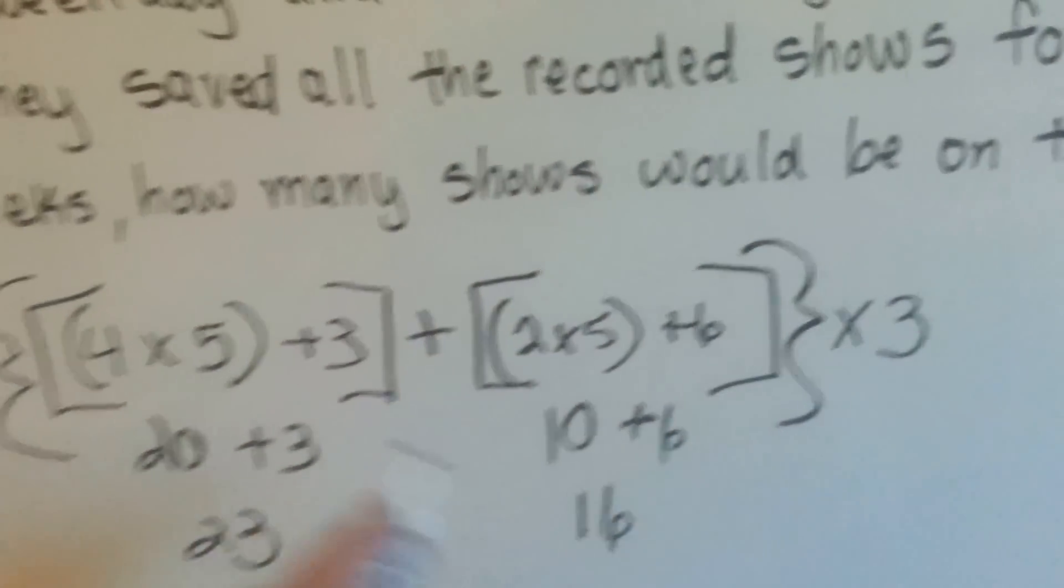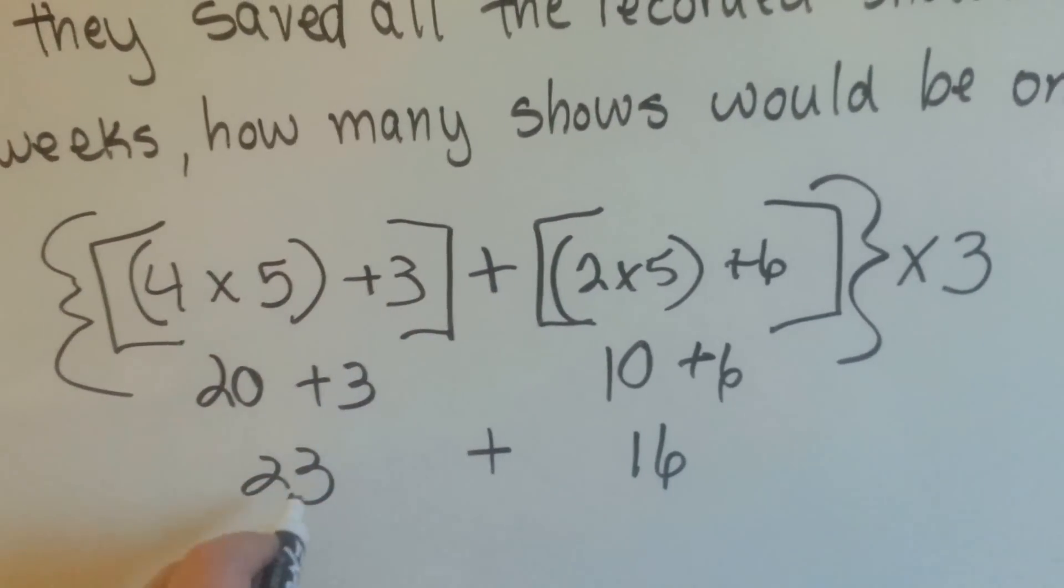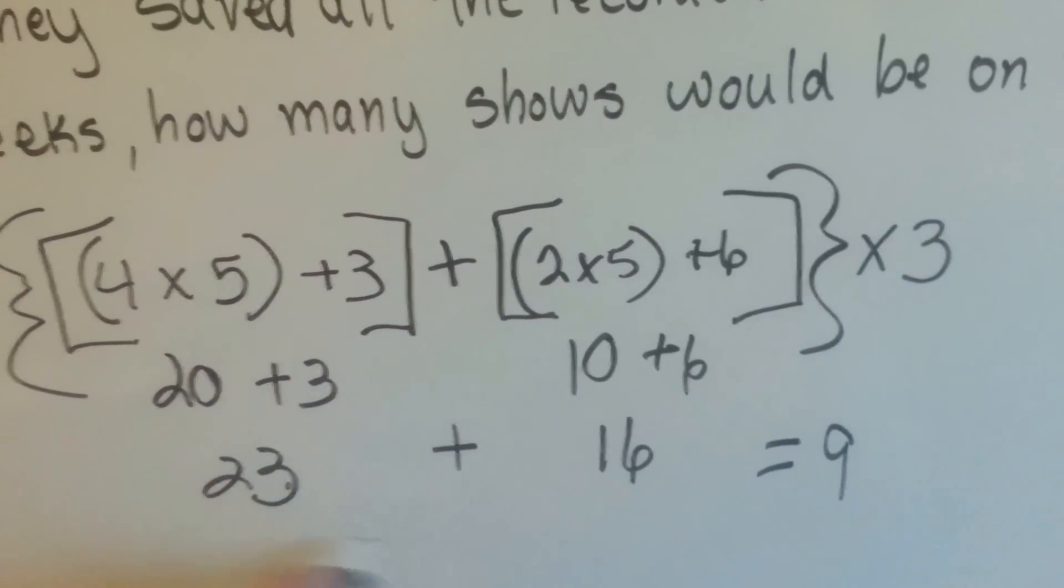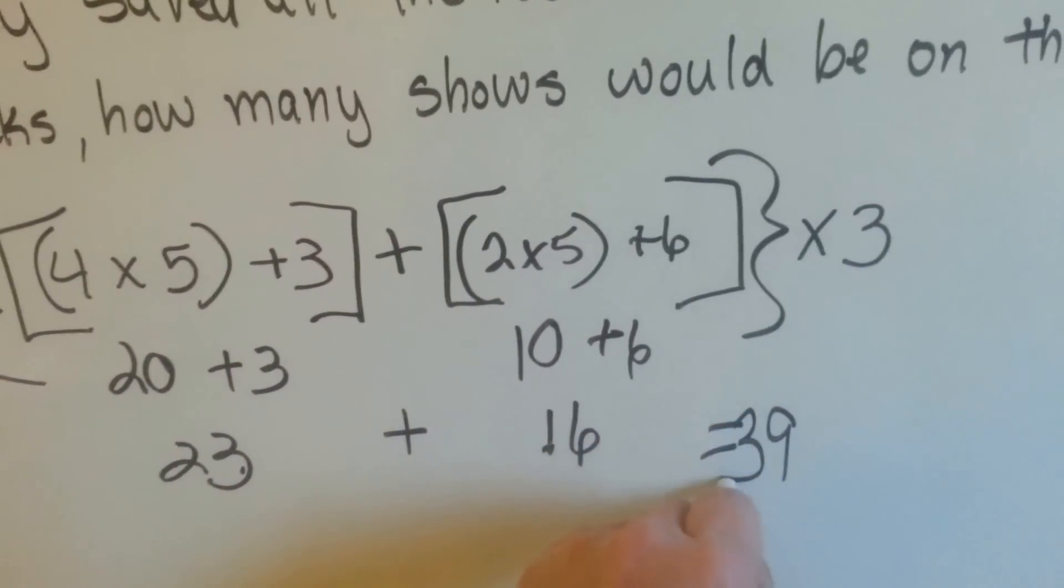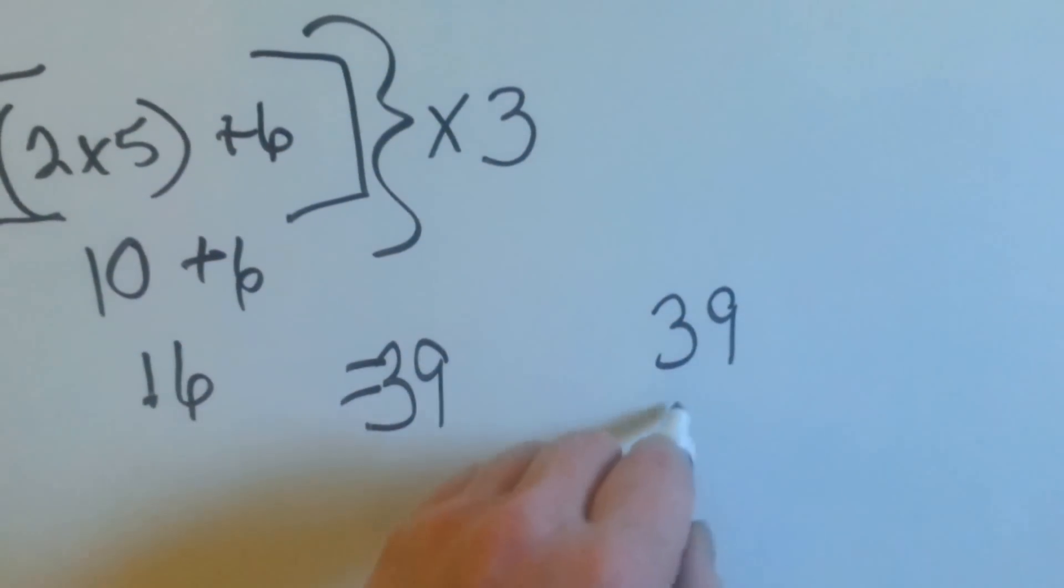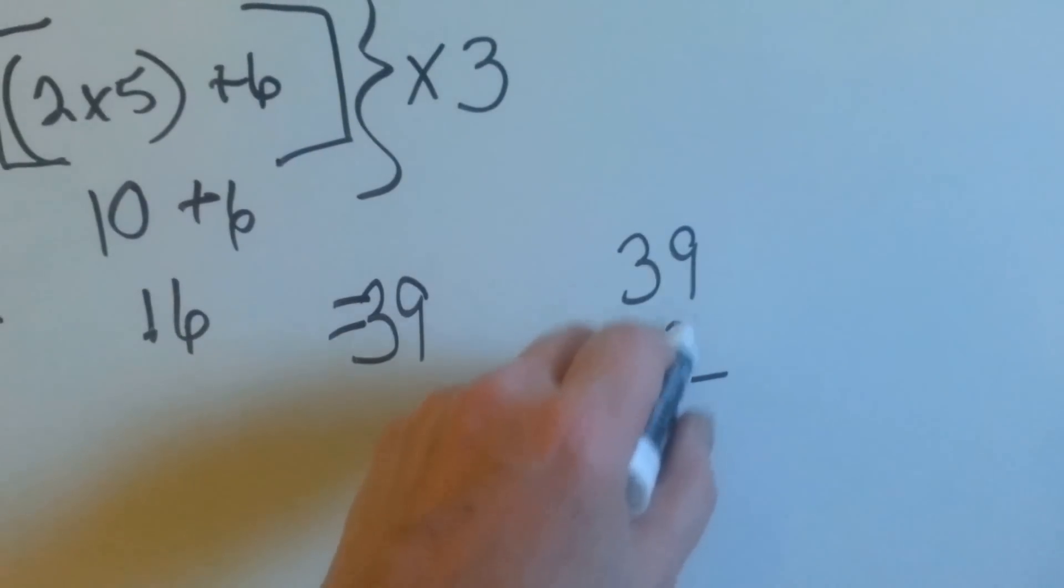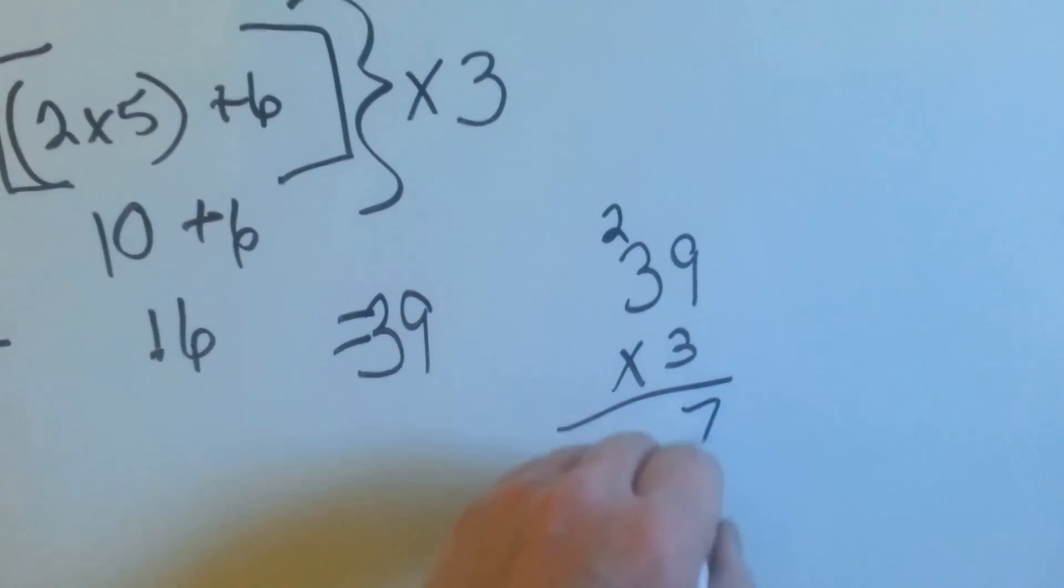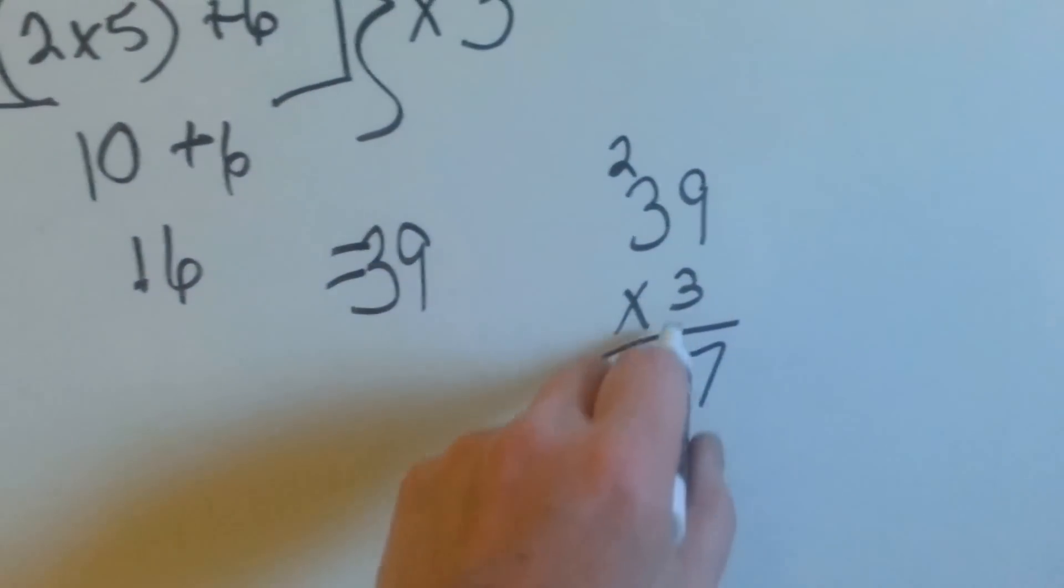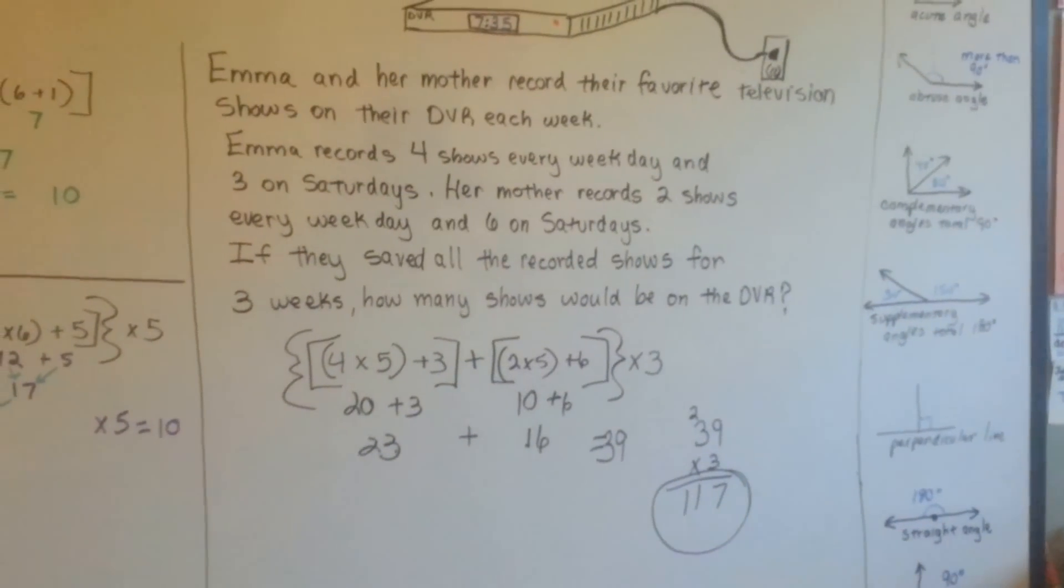We could have done braces to tell us that all of that was together. So now we need to do 23 plus 16. And 23 plus 16, 3 and 6 is 9, and the 2 and the 1 for tens is 3. So we have 39. And now we need to multiply that by 3. So 39 times 3. That means they have 39 shows they're recording every week on the weekdays and on Saturdays. 3 times 9 is 27, we carry the 2 and put the 7 down. 3 times 3 is 9, 10, 11. That's 117 shows that they've got on their DVR for the 3 weeks.